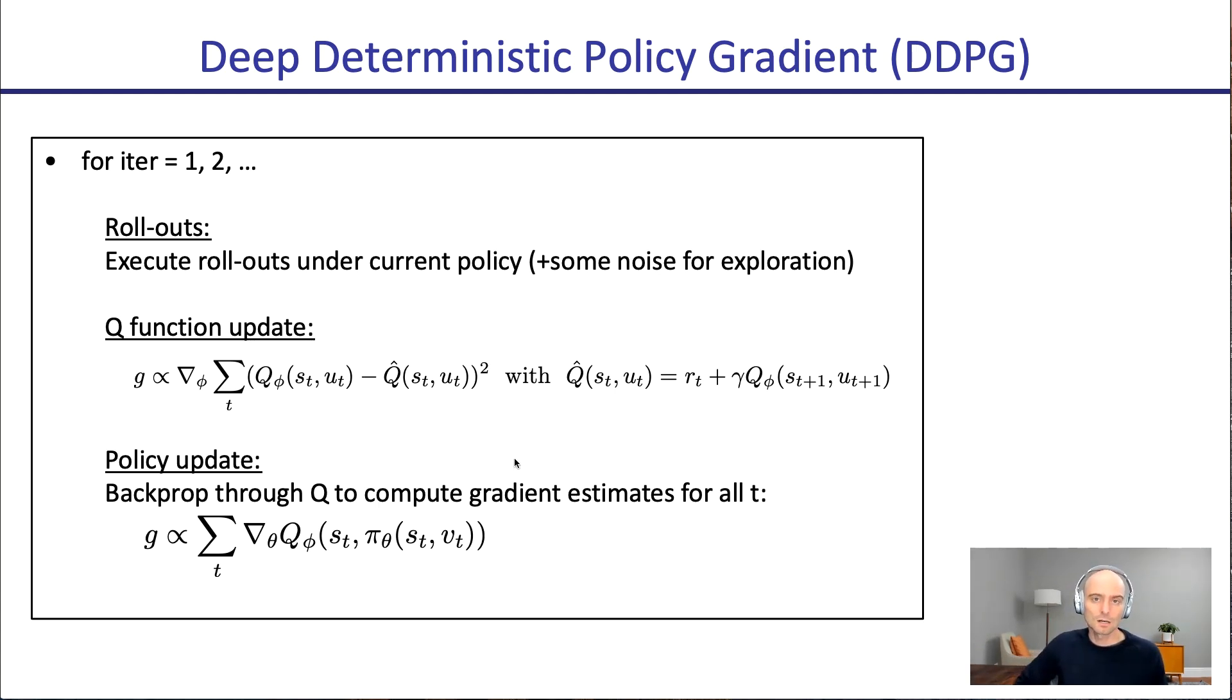In the original DDPG paper, they use the one-step bootstrap signal, but variants have been done since that are often still called DDPG, where you would use multiple steps of rewards followed by the Q function as your target. So we're doing Q learning, but we're doing it based on data collected from the current policy or from a recent policy.